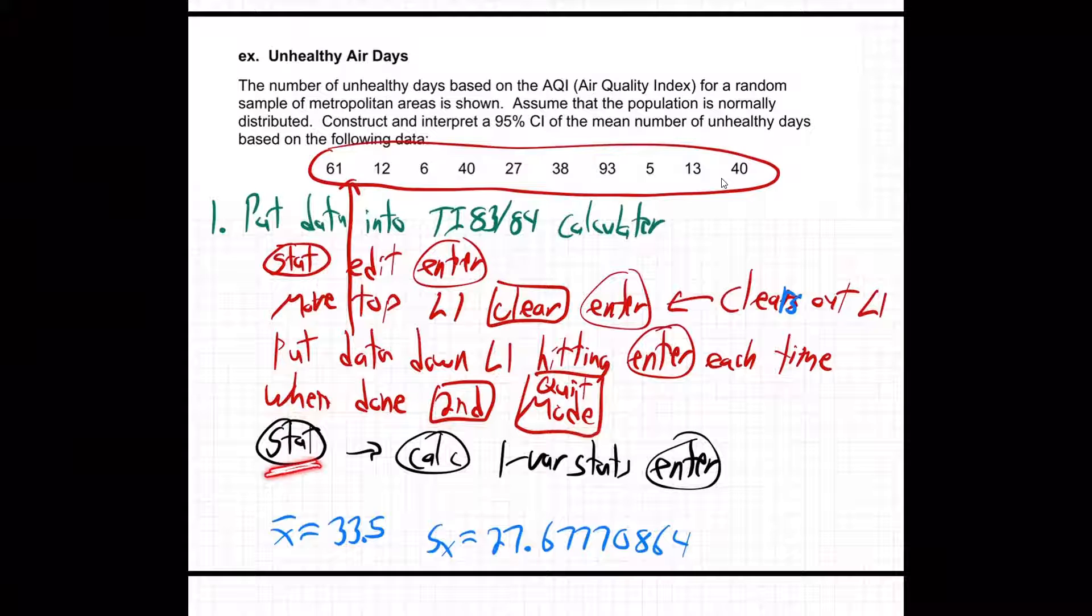And then after that, you hit stat, calc, and then move over. I'm going to move over to calc, and hit one variable stats, and enter. Now, it might look a little different on different calculators, that last part. Sometimes you might need to hit enter twice here. You might need to hit enter twice on some of the new ones. I'll show it now on my screen.